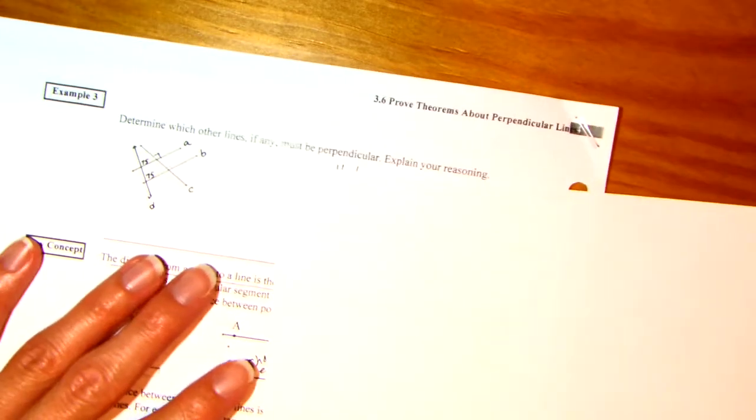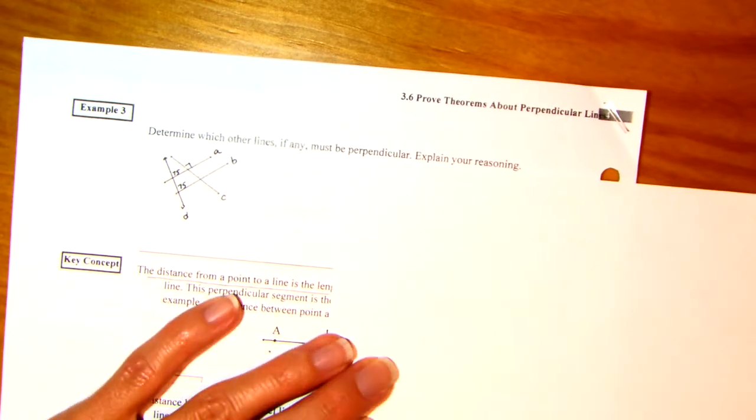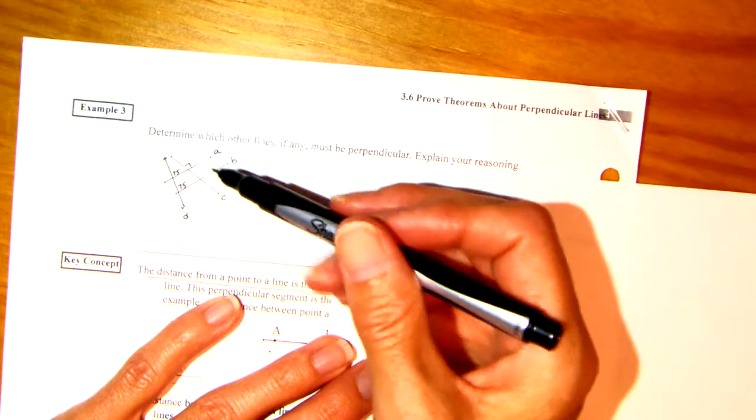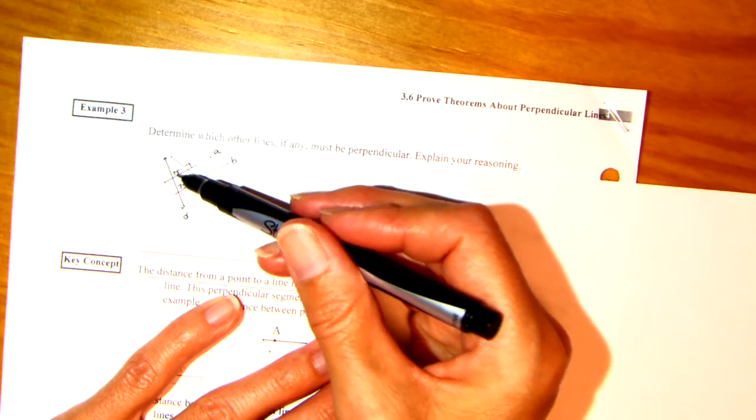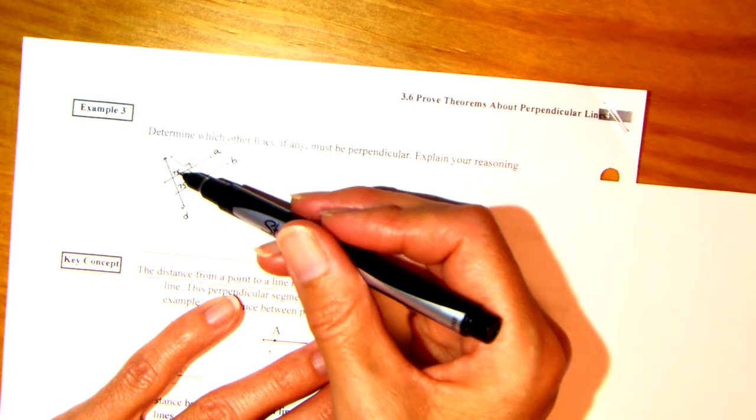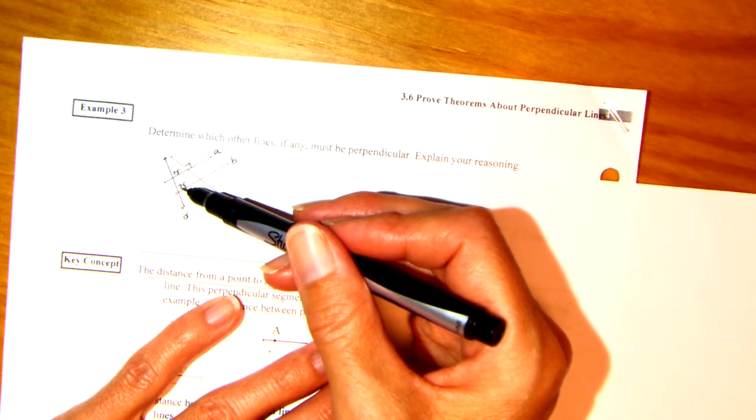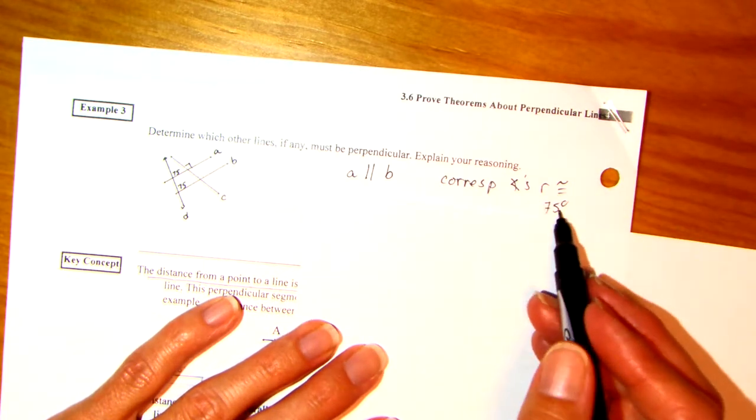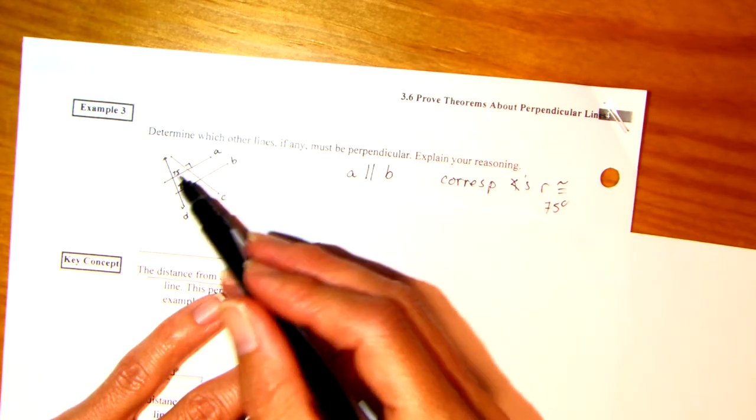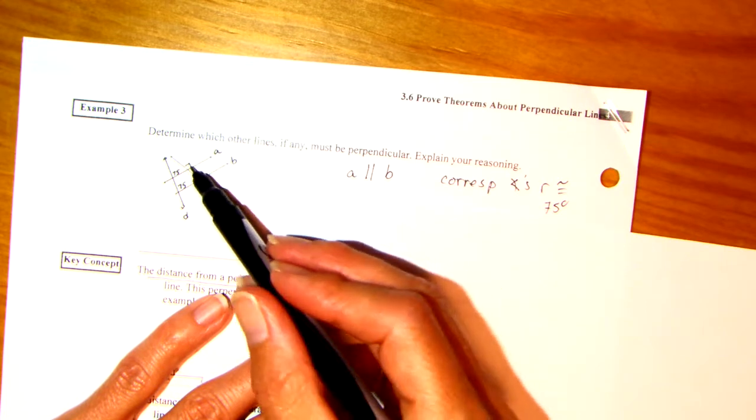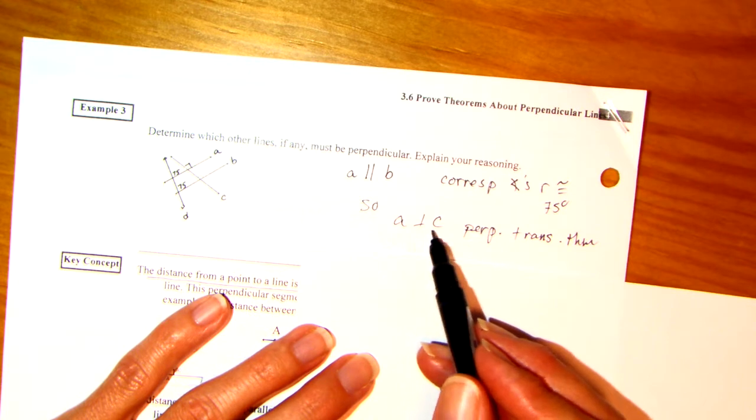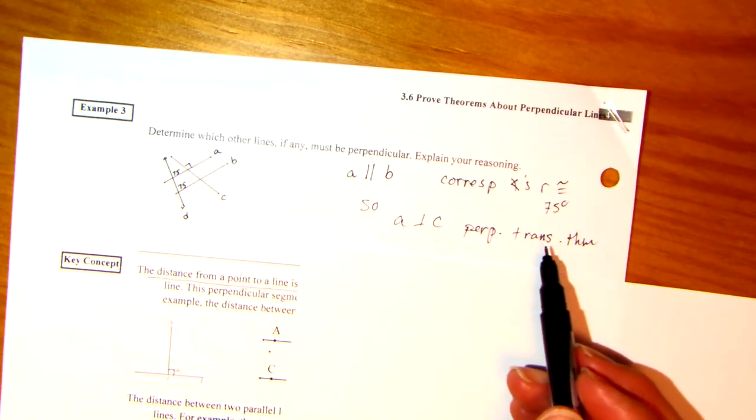Last page. Then we're almost done. Okay. So let's put this into action here. Determine which lines, if any, must be perpendicular. Okay. First of all, if you look, these two angles are the same. These two angles are corresponding. So if those corresponding angles are the same, that means A has to be parallel to B. Why? Because we have corresponding angles that are congruent at 75. So if A is parallel to B, these two are also corresponding angles. If one of them is a right angle, then the other one's a right angle. So A also must be perpendicular to C because of the perpendicular transversal theorem.